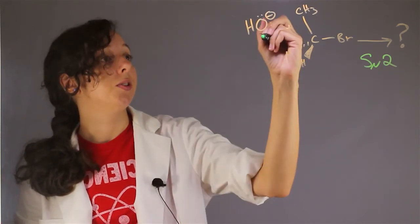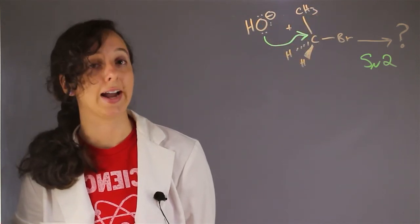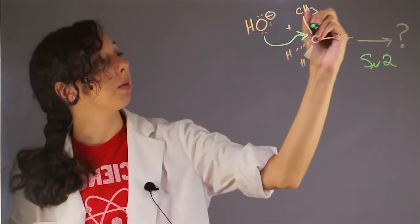So what I'm going to do is draw a reaction arrow here, because that's how SN2 reactions work, attacking at the center carbon. I'm going to have bromine leave.